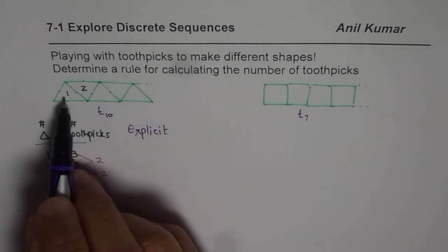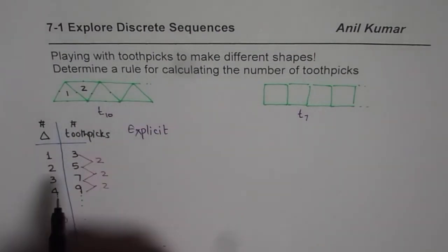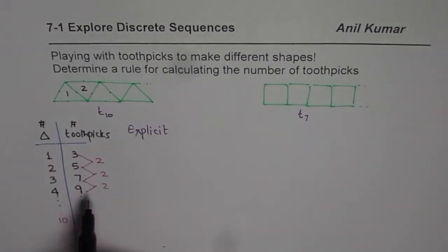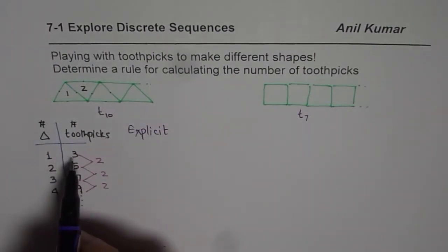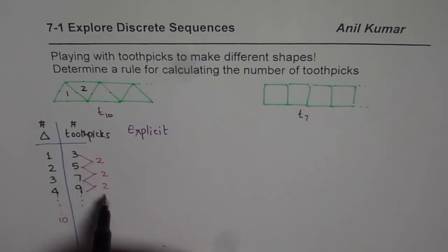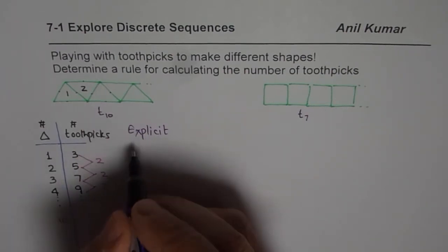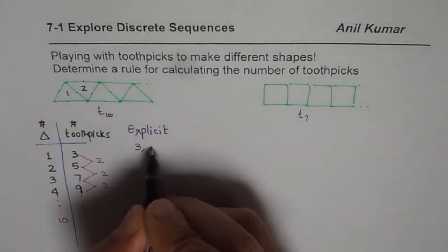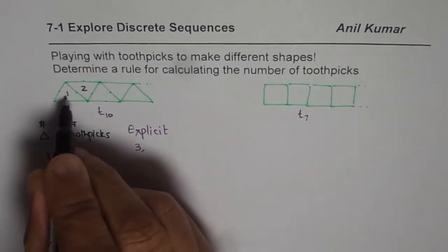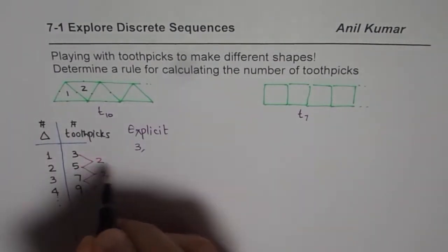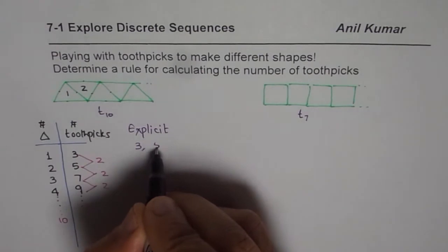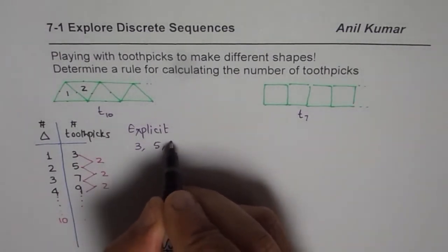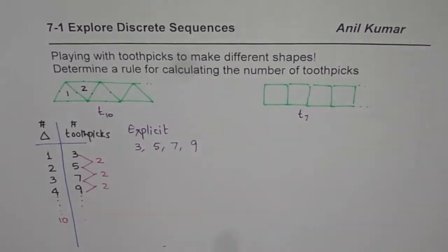So we want to know how many toothpicks are there in the tenth one. We see a pattern: we start with three and add two more to get the next one. Let us write down the number of toothpicks — for triangle one it is three, for two it is five, then seven, nine, and so on.